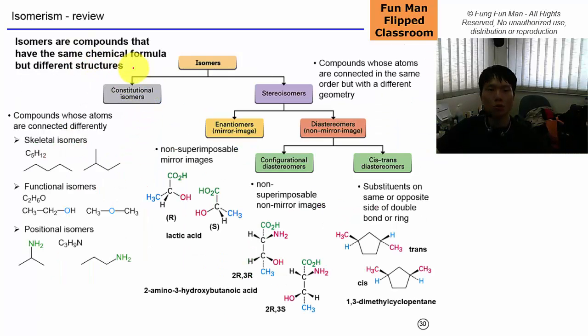So some charts for you to help you understand this topic better. A summary, now isomers are compounds that have the same chemical formula but different structures. This is the main heading. We have got two main kinds of isomer, constitutional isomer, stereoisomer. For constitutional isomers, there are compounds whose atoms are connected differently. Like branching, functional group isomers, positional isomers.